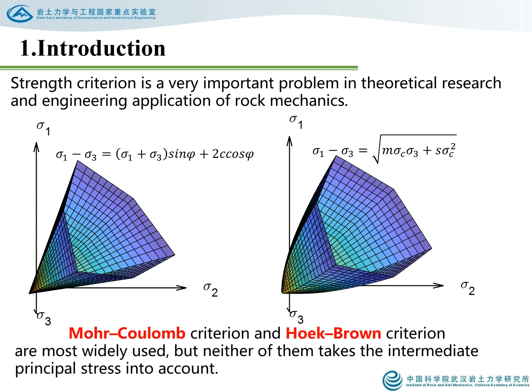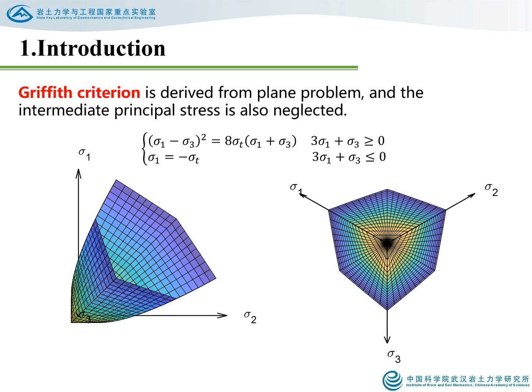Strength criterion is a very important problem in theoretical research and engineering application of rock mechanics. The Mohr-Coulomb criterion and Hoek-Brown criterion are most widely used, but neither of them takes the intermediate principal stress into account. The Griffith criterion is derived from a plane problem, and the intermediate principal stress is also neglected.